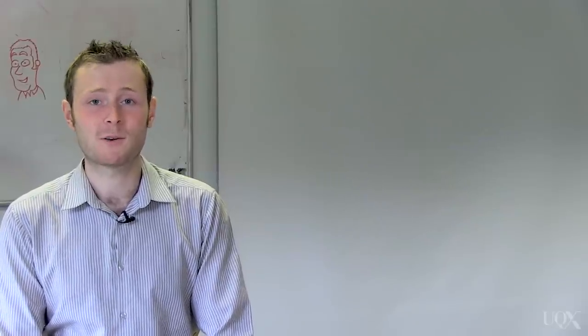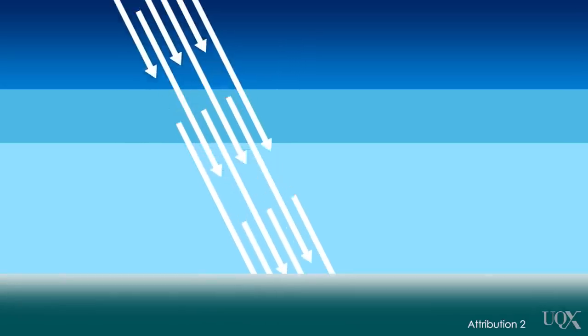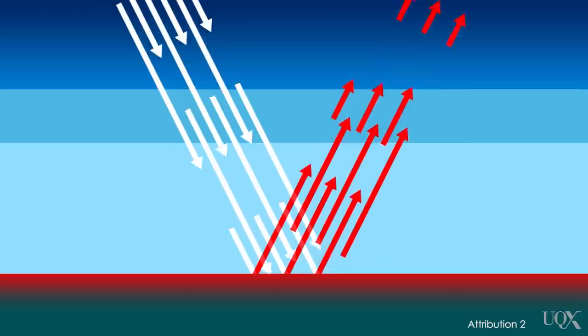Now, we understand the greenhouse effect a bit better. Greenhouse gases let sunlight through to warm the surface. The surface then glows with infrared light. Our eyes aren't tuned to its frequency, so it's invisible to us.